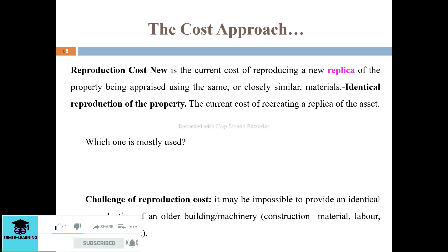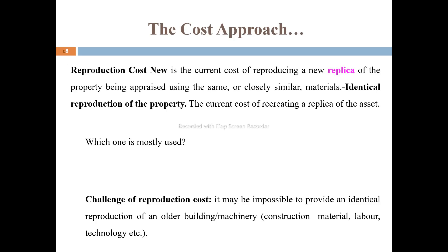The most commonly used method is replacement cost, as it is the easiest to apply. The challenge with reproduction cost is that it may be impossible to provide an identical reproduction of an older building or machinery, because construction materials, labor, or technologies may be different from those used in the old building.